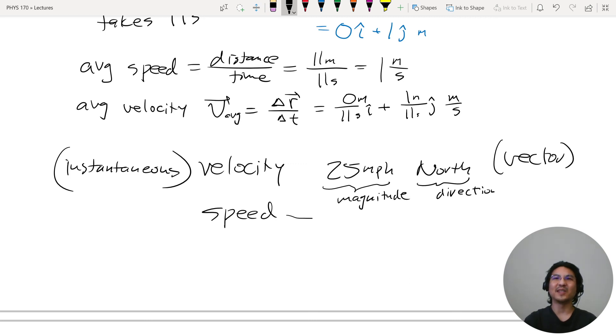Speed is just the magnitude of the velocity vector. So if you say 25 miles per hour north, that's a velocity. 25 miles per hour is speed, because it's only the magnitude of the velocity vector.